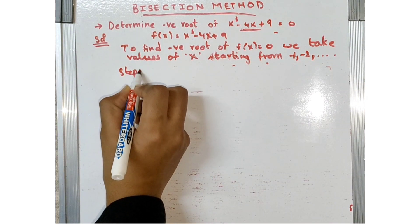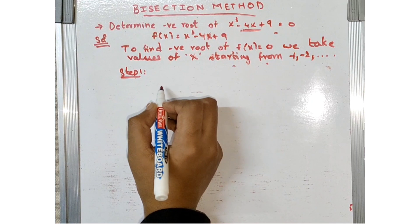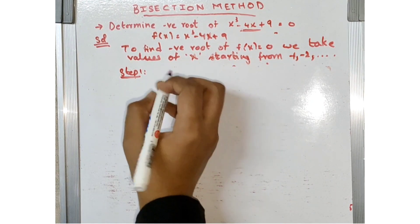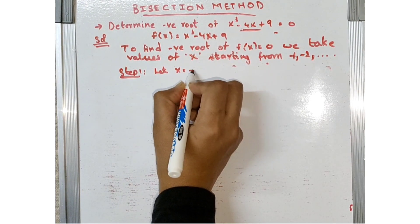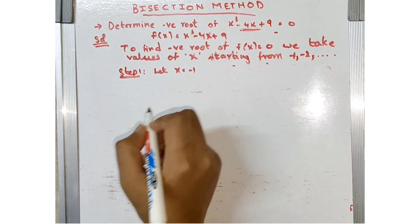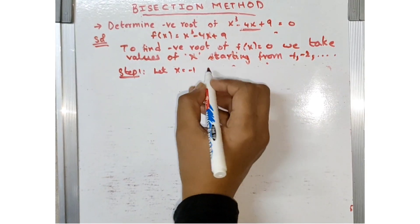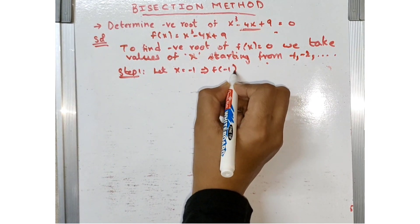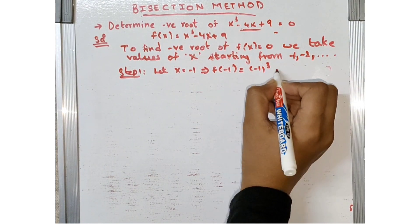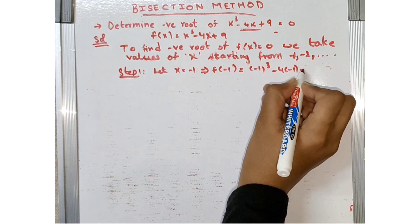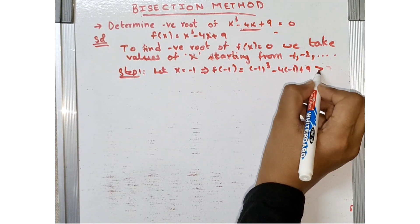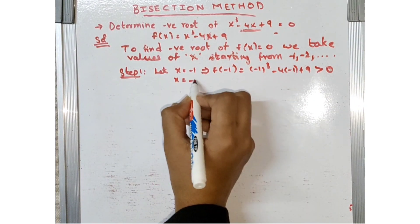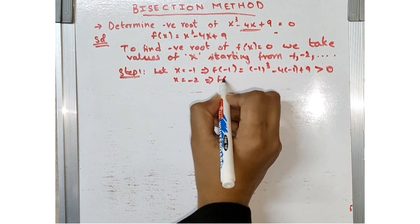Now Step 1: we have to choose the values of a and b. Let us take x = -1. Since it is a negative root we only take negative values. Substituting x = -1: f(-1) = (-1)³ - 4(-1) + 9. After calculating, you get a positive value, which is greater than 0.